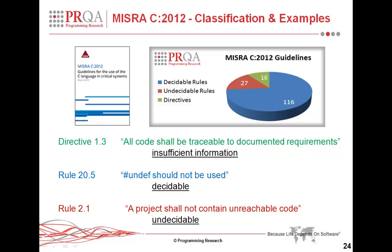An example of an undecidable rule is Rule 2.1: a project shall not contain unreachable code. If you think about it, we have already seen earlier an example showing that it is undecidable whether execution goes through a certain path or not. And this is the general version of it, which is also undecidable.